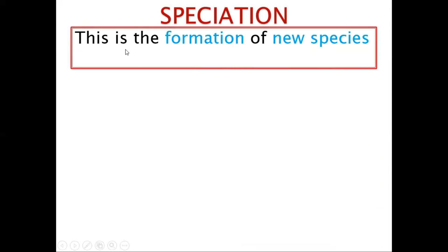What is speciation? Speciation is the formation of new species. So what is a species? A species is a group of organisms which can interbreed to produce a fertile offspring.